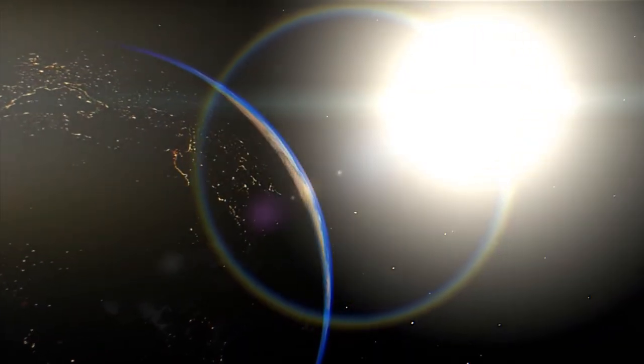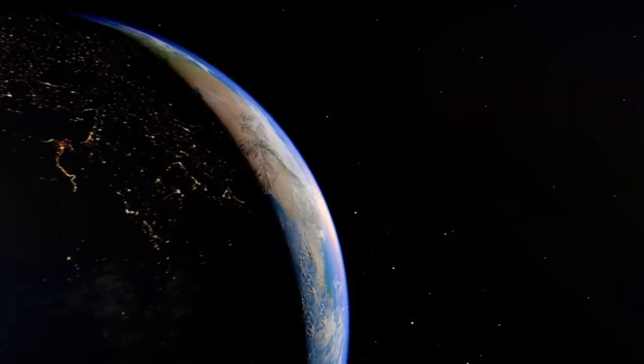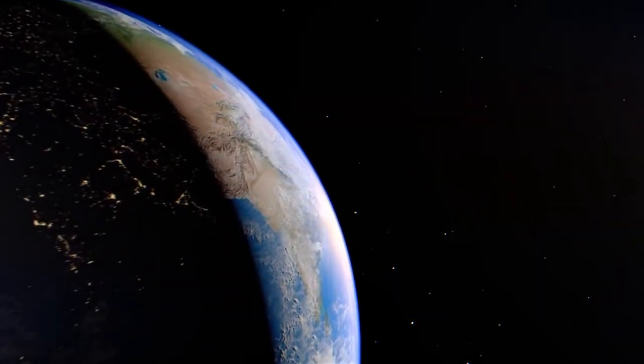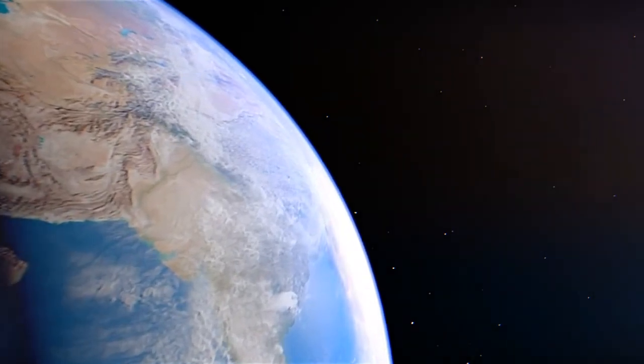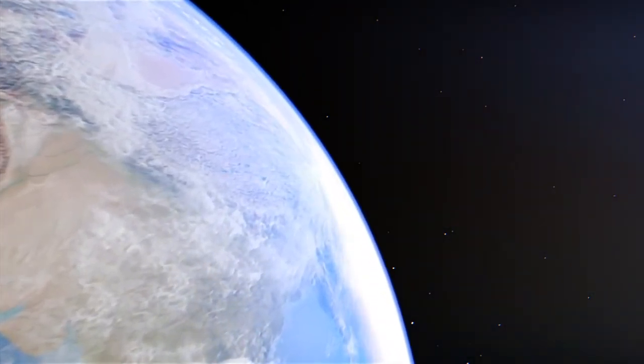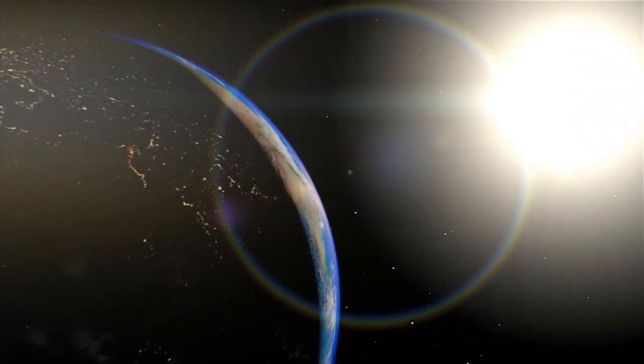The equator receives more sunlight than anywhere else on the planet. Countries that lie on the equator don't have seasons like summer, spring, autumn, and winter, and the climate at the equator tends to be hot and humid.